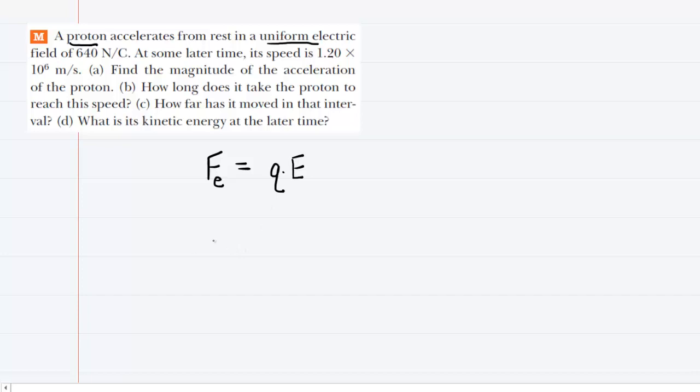We also know that from Newton's second law that the sum of all the forces on an object equals its mass times its acceleration. We can assume safely that the only force acting on this proton is the electrostatic force, so we can draw that very simplistically. That means that the net force would simply be that electrostatic force, so we can say Fe is equal to Ma.